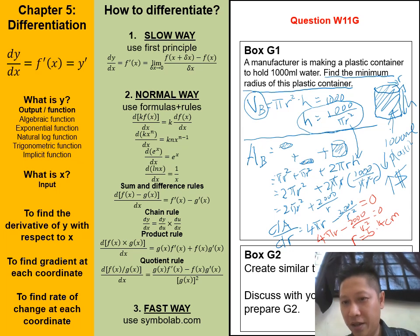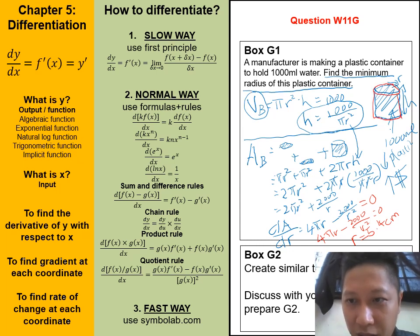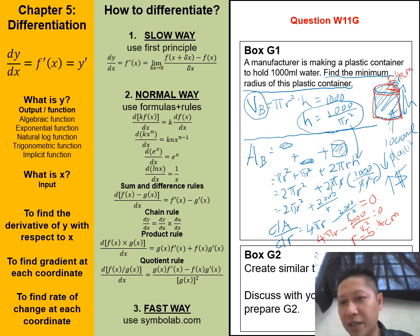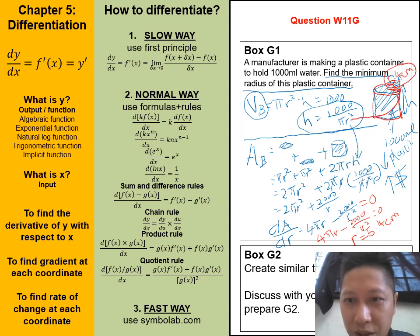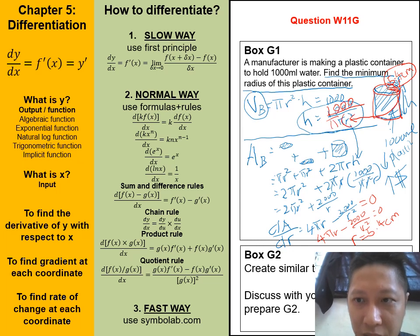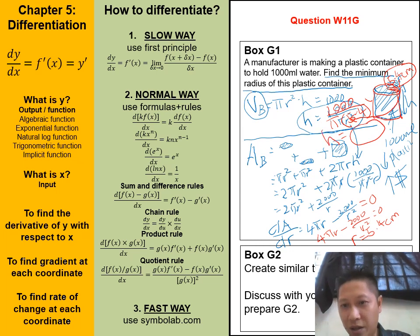It means that the manufacturer will ask the designer to design the bottle with the r equals to 5.4 cm. Then you ask another question. How about the h? What is the value of the h? No worry, because h, we can find it when we replace r equals 5.4 into the relationship equation here. So 1000 divided by pi times 5.4 power of 2. Then we're going to get what is the value of the h. It means that the manufacturer will ask the designer to draw out the bottle with r equals to 5.4 and also equals to certain h here.